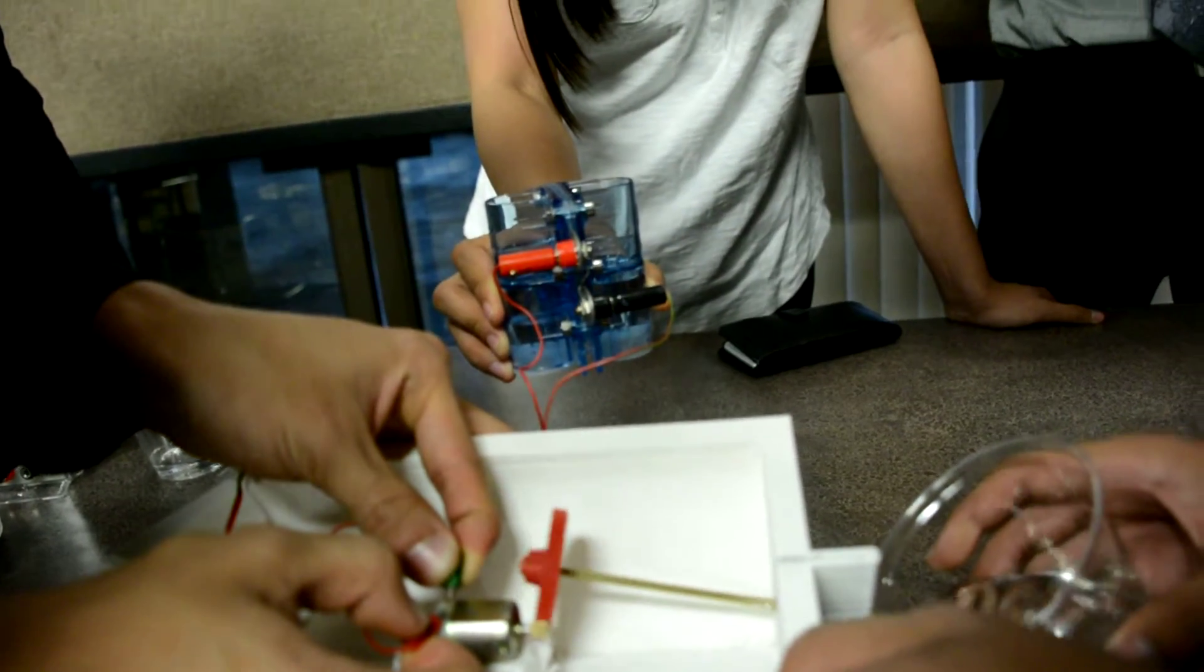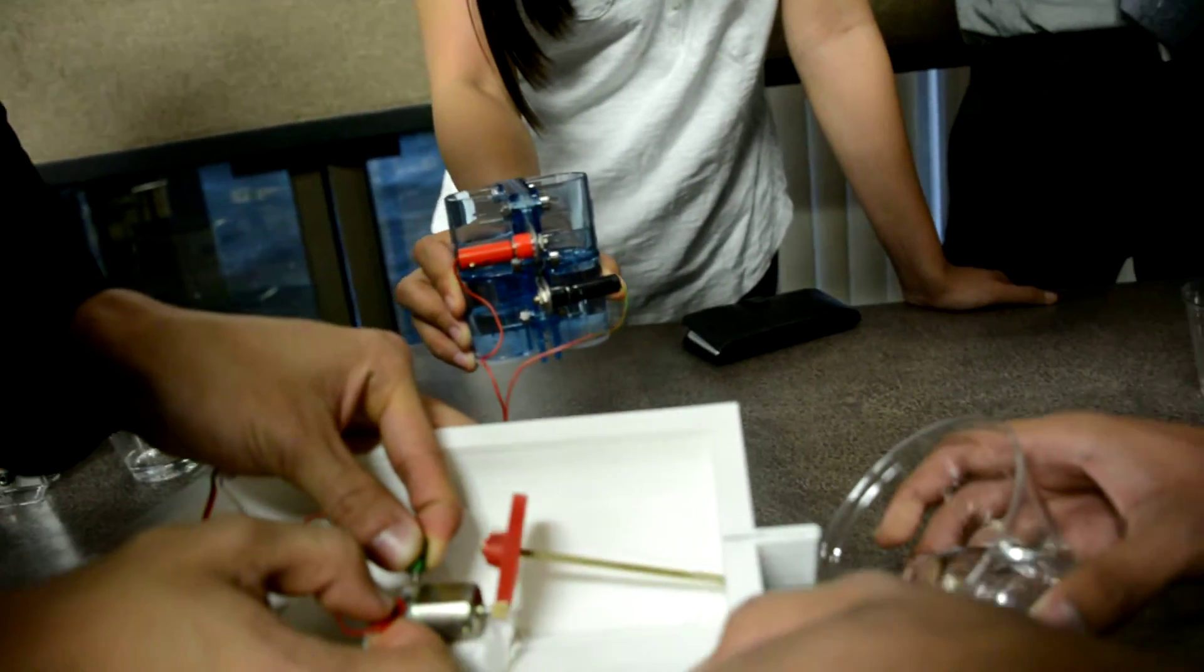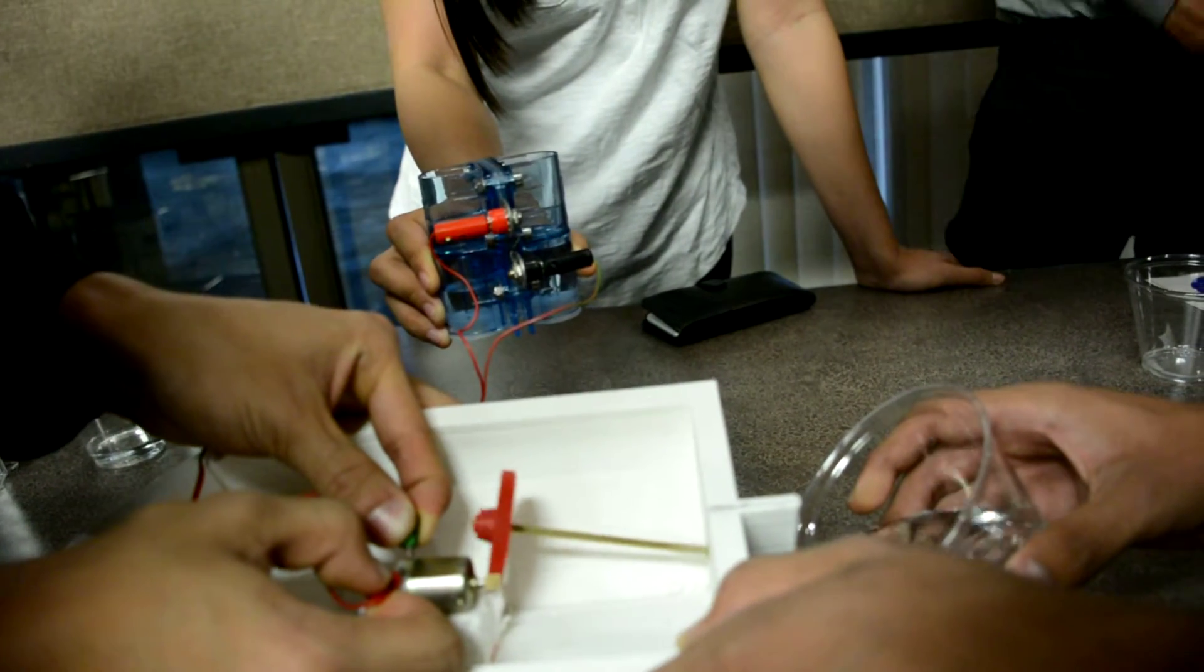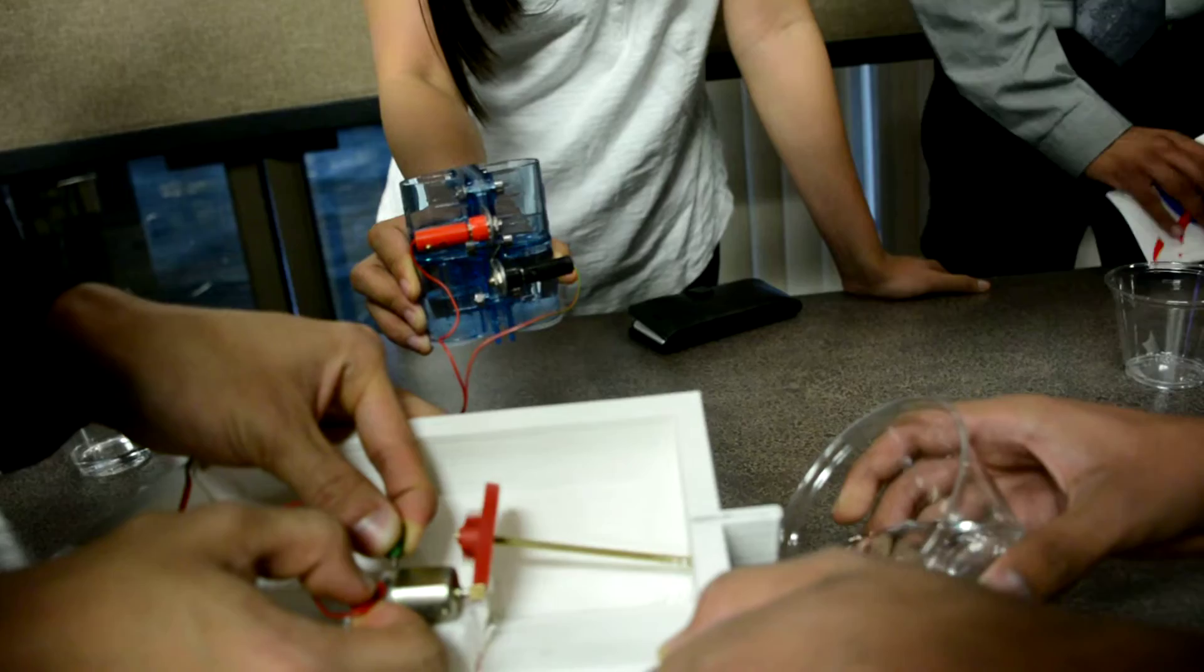The hydrogen fuel cell is working off of a small electrical charge from solar panels. The hydrogen fuel cell uses water as its main source of fuel.